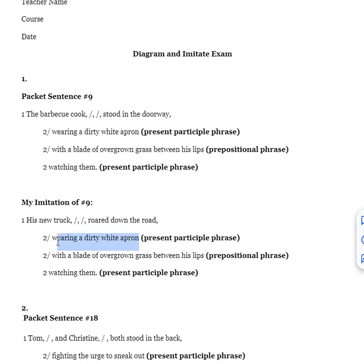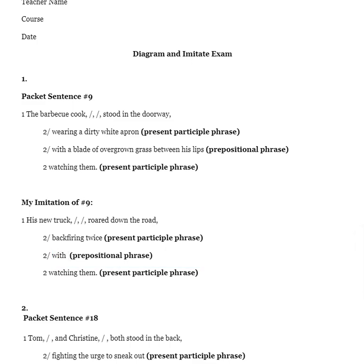Here's my first medial position free modifier, a present participle: backfiring twice. Simple, simple, but effective. Here's the prepositional phrase that I used, the word 'with' again: with its oversized tires turning up gravel, roared down the road. And then here's what I have in the final position.